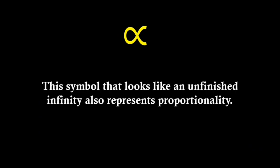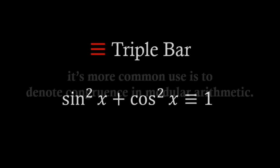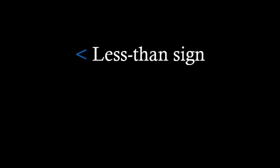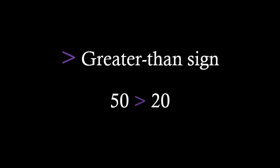This symbol that looks like an unfinished infinity also represents proportionality. The triple bar or the equivalent sign can be used to denote an identity, but its more common use is to denote congruence in modular arithmetic. The less than symbol is used to indicate that one quantity is smaller than another. Its opposite, the greater than sign, is used to indicate that one quantity is larger than another.